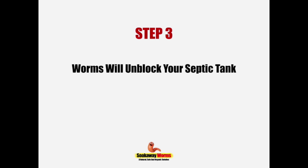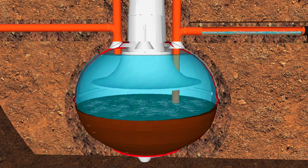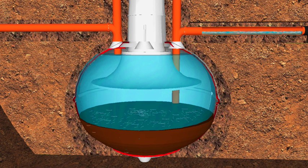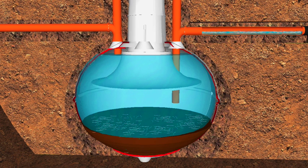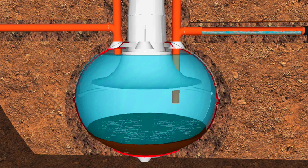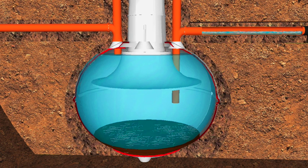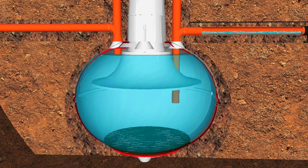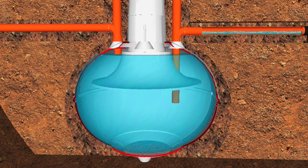Step three: soak away worms will also unblock and clean your septic tank. As we've seen, sludge is the main reason why septic tanks and soak aways develop problems. The worms will not only remove the sludge from the septic tank, they'll also keep it clean. So instead of having to desludge your septic tank once, twice, or three times a year, they'll reduce your septic tank emptying times to virtually once every 10, 15, or 20 years.